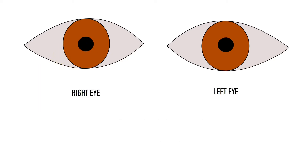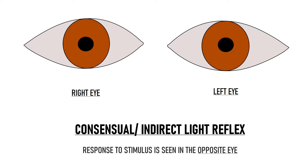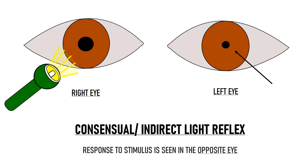The other reflex is the consensual light reflex. Consensual light reflex is when the light stimulus is given to one eye but the response to that stimulus is seen in the opposite eye, i.e. the contralateral eye. So again in this patient, when we show light in the right eye, we will see constriction of the pupil in the opposite eye, i.e. the left eye. This constriction of the pupil in response to light stimulus given in the contralateral eye is known as consensual light reflex.